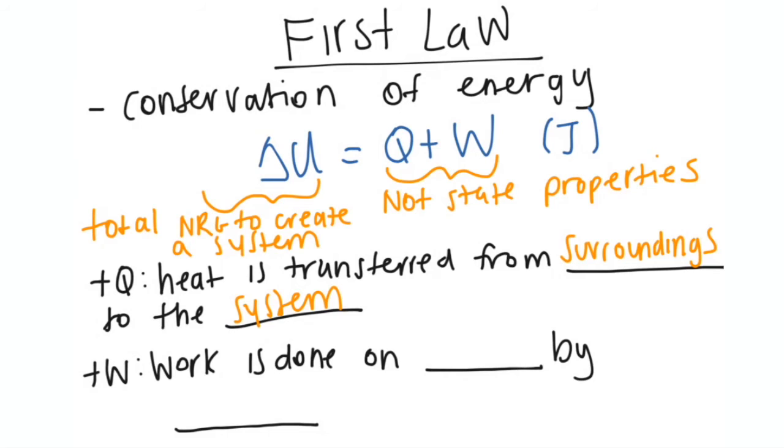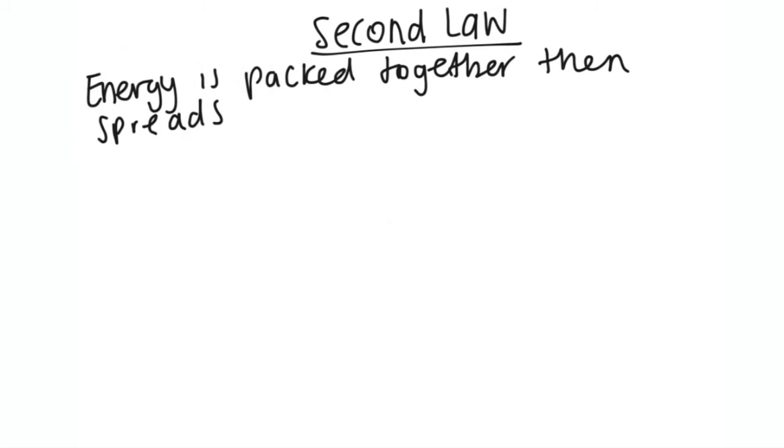And it's the same thing for work. So positive work means that work is done on the system. So the system is receiving energy, it's receiving joules of energy by the surroundings. So the work is being done by the surroundings. So that's basically it for the first law. It's pretty straightforward. We're going to jump into the second law.